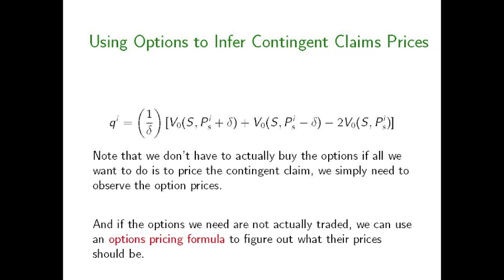Importantly, we don't actually have to buy the options if all we want to do is price the contingent claim. If we wish to actually purchase the contingent claim, we would assemble the portfolio of options to collect the desired payouts. But if all we want are the prices of contingent claims, we can take observations of option prices — and since options on the Standard & Poor's 500 are traded in the U.S. financial system, we can look those up online, substitute those option prices into the formula we derived, and compute the price at which various contingent claims would sell.